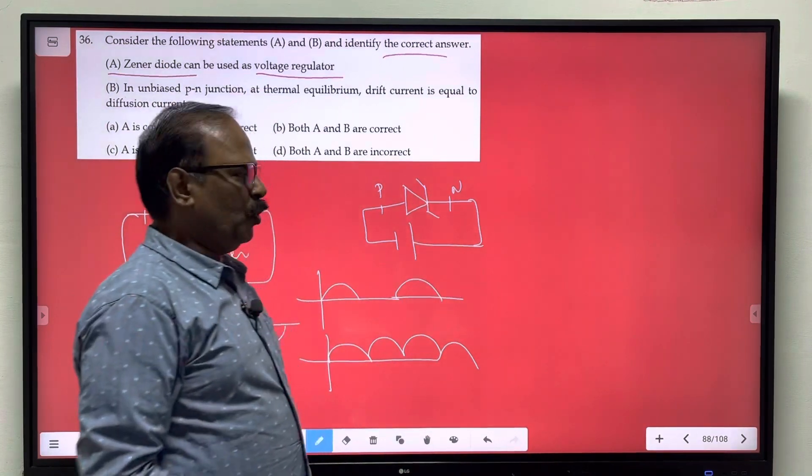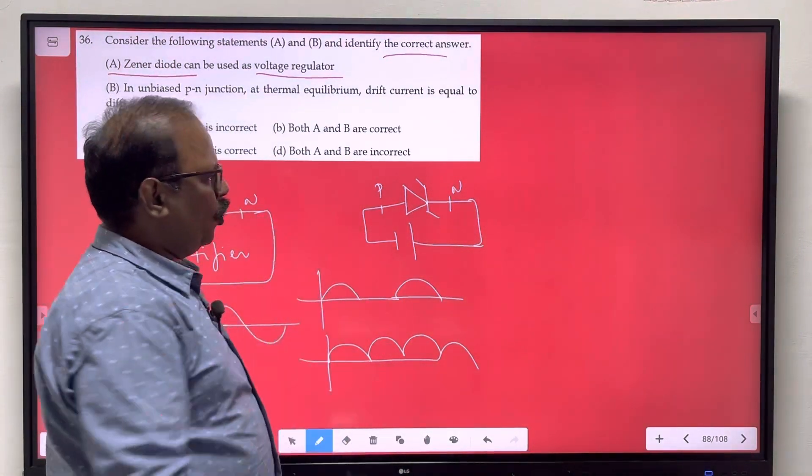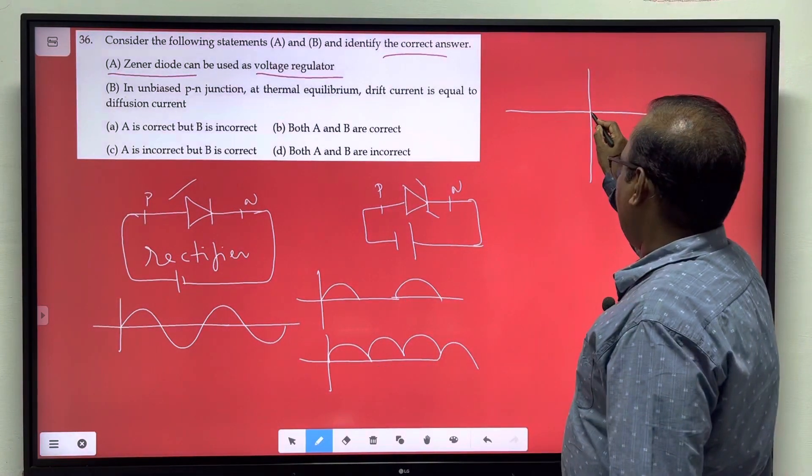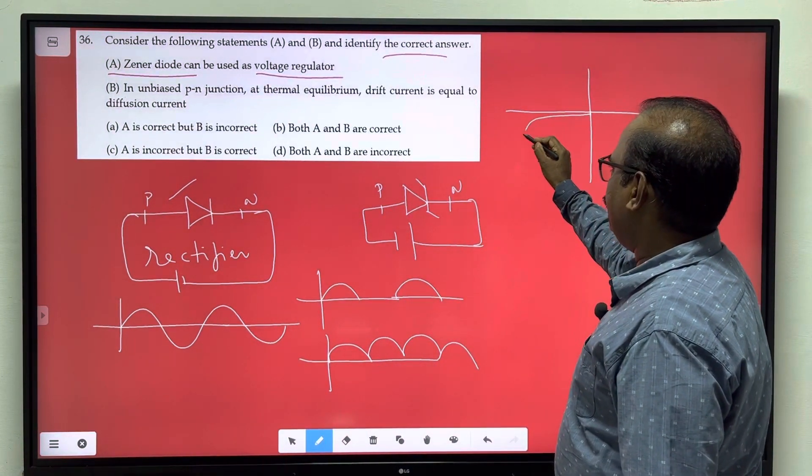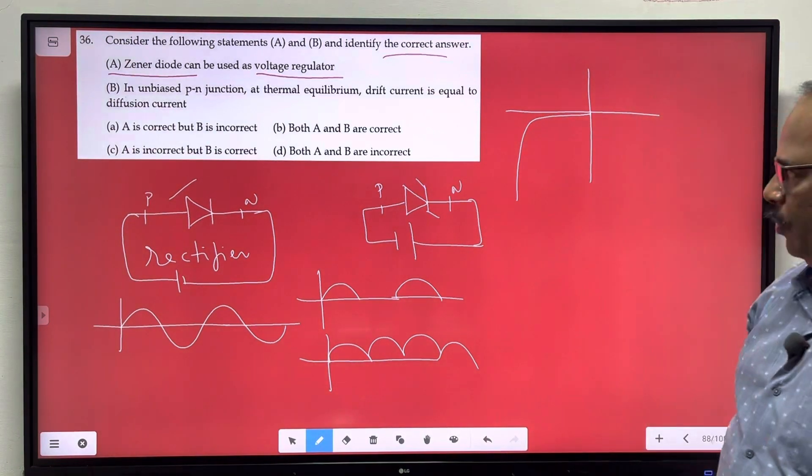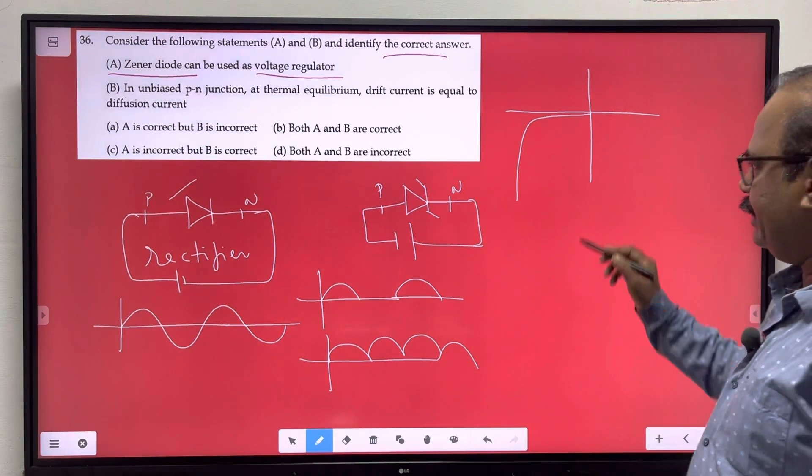EZ symbol. Now reverse flow of current is leakage current and breakdown is sudden current. This is Zener diode.